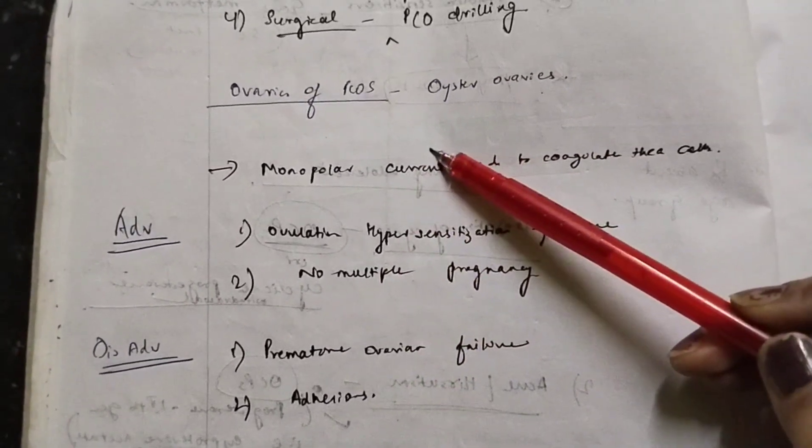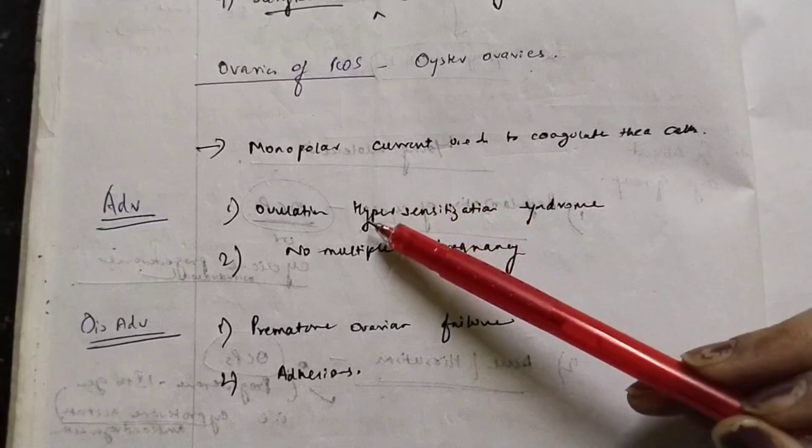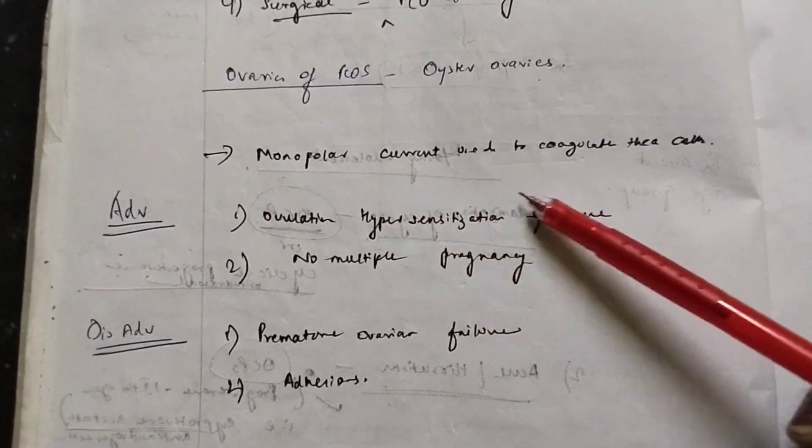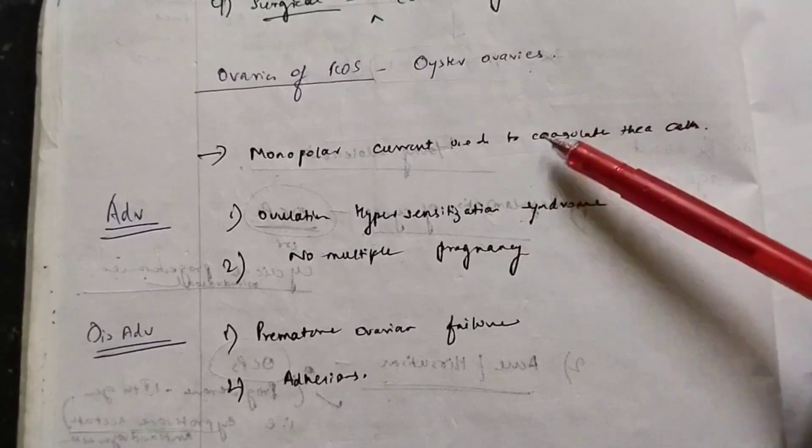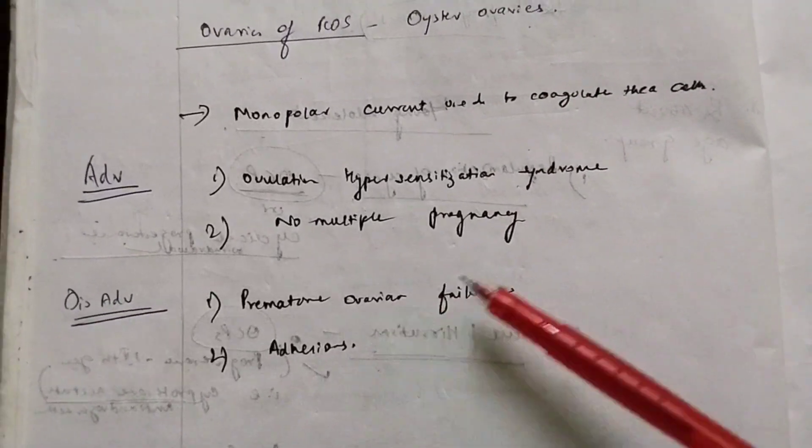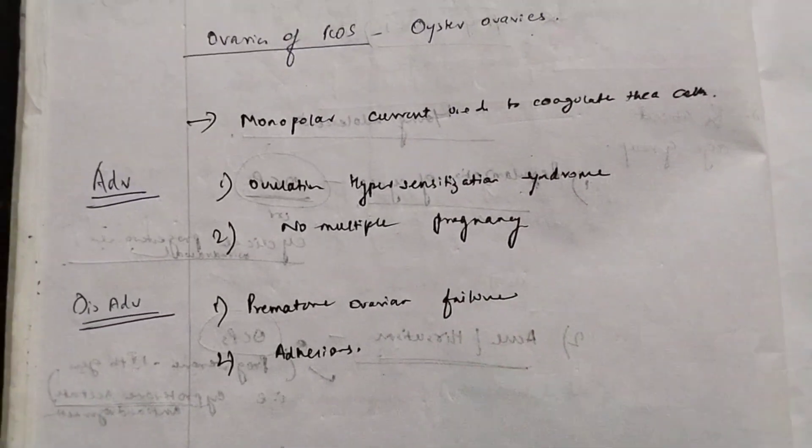What is the advantage and the disadvantage of this monopolar current usage? First advantage is that it won't cause ovulation hyperstimulation syndrome and there will be no multiple pregnancy in case of this procedure. The disadvantage is that there will be premature ovarian failure and there can be adhesions between the follicles.